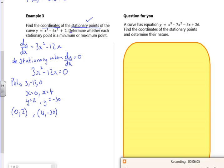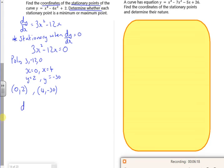So, now, I need to determine whether each stationary point is min or max. And it might ask you for the nature of the stationary points. Right. So, I just do the second differential. So, d²y/dx² is going to be 6x - 12.